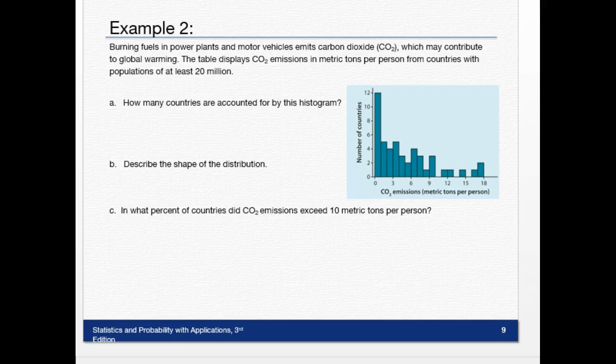Since burning fuels and power plants in motor vehicles emit carbon dioxide, which may contribute to global warming, the table displays CO2 emissions in metric tons per person for the country with populations of at least 20 million.